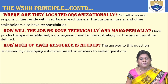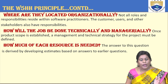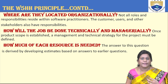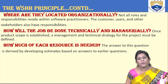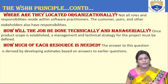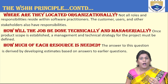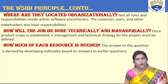The W5HH principle also has two H's. The first H: how will the job be done technically and manageably — how technically sound are you at implementing it and are you able to manage everything properly? The second H: how much resource is needed? If resources are not available, work will not progress. Resources are very important in any section of work. This ends the discussion of software project management.